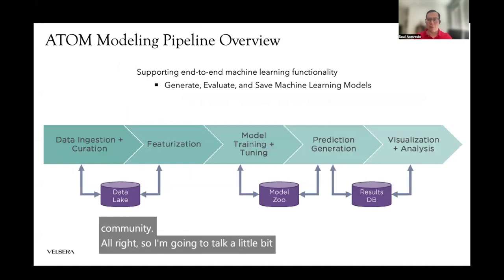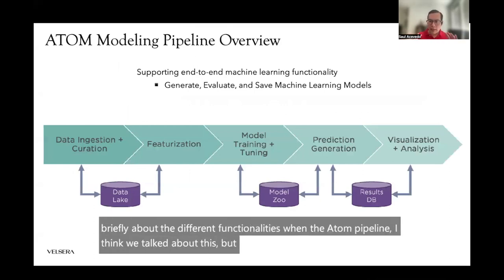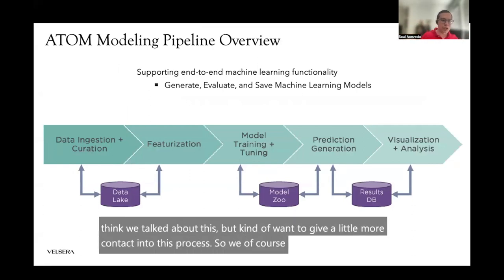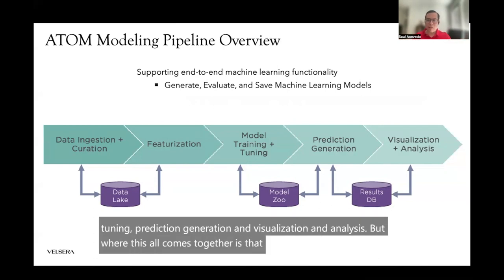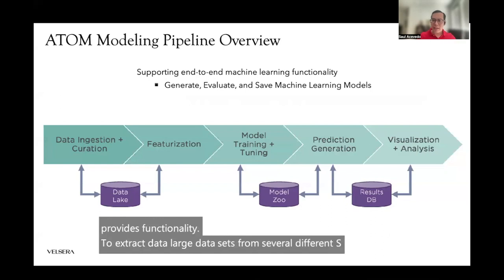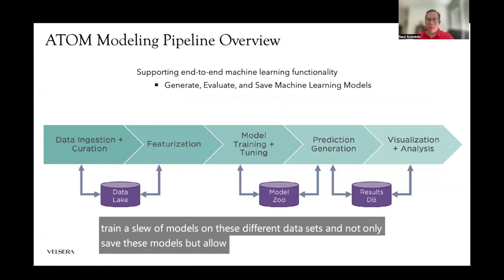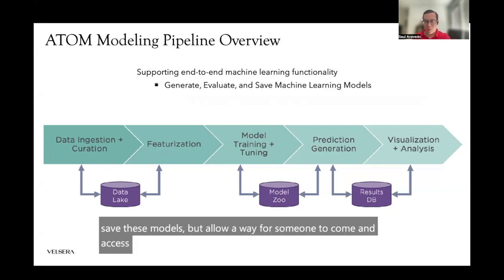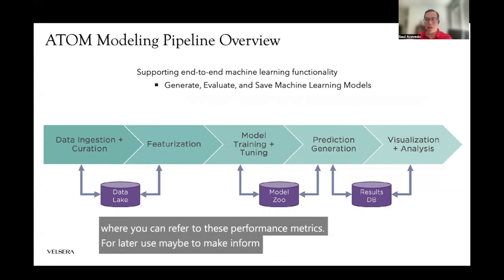I'm going to briefly cover the different functionalities of the ADAM pipeline. We have functionality for data ingestion and curation, featurization, model training and tuning, prediction generation, and visualization and analysis. Where this all comes together is that the ADAM modeling pipeline provides functionality to extract large datasets from several different sources, train a slew of models on these datasets, and not only save these models but allow someone to access them later. When you train these models, you save the results onto a database where you can refer to these performance metrics for later use, maybe to make informed decisions in your drug discovery pipeline.